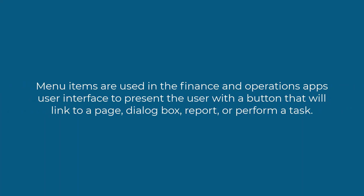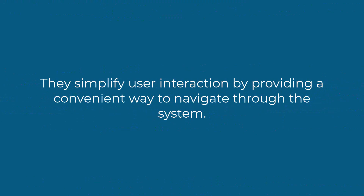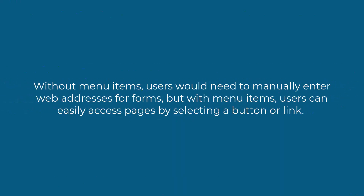Menu items in Dynamics 365 Finance and Operations serve as buttons with a link to a page. They can link to a dialogue box, a report, or a form. They simplify user interaction by providing a convenient way to navigate through the system. Without menu items, users would need to manually enter web addresses for forms, but with menu items they can easily access pages by selecting a button or a link.